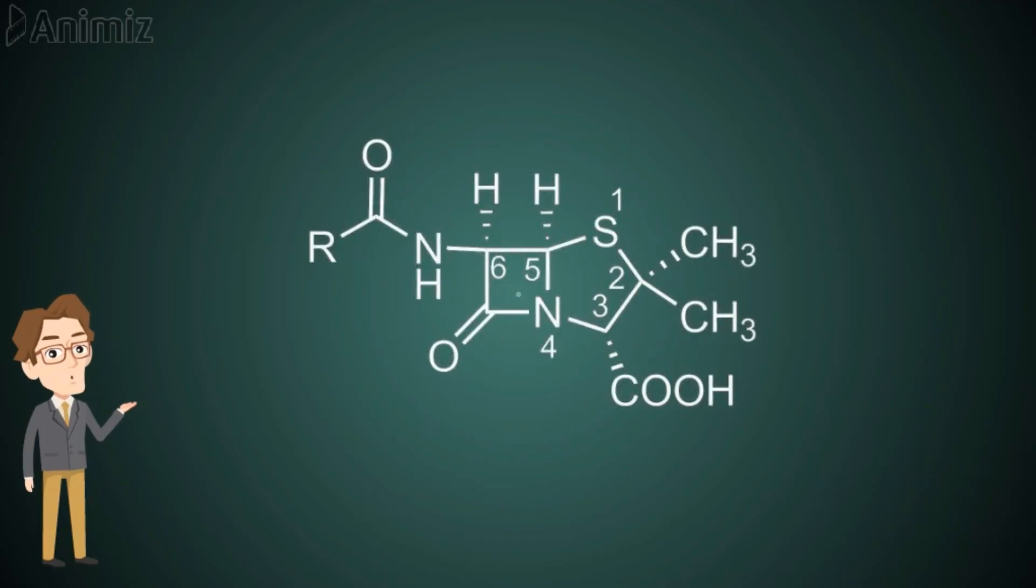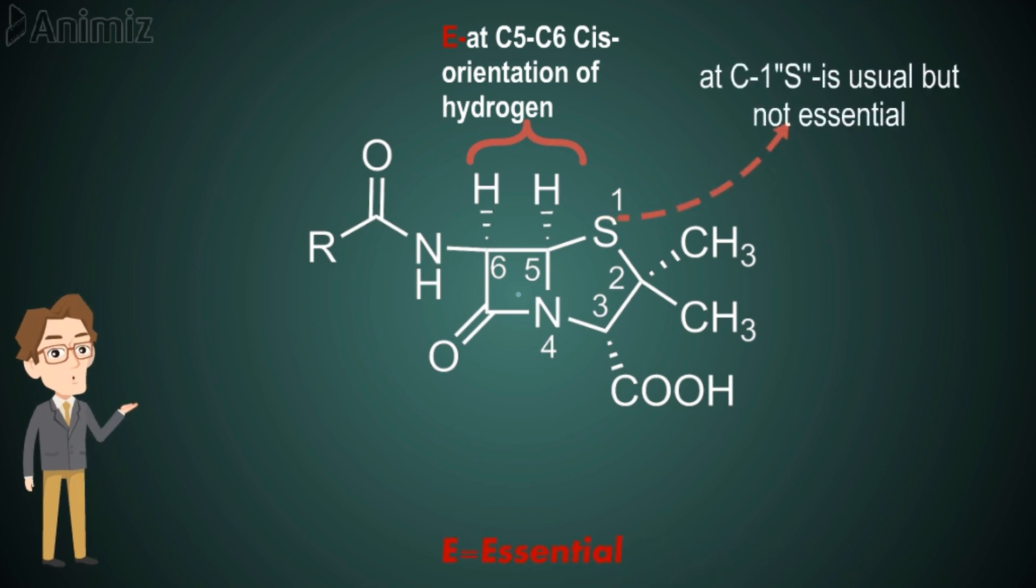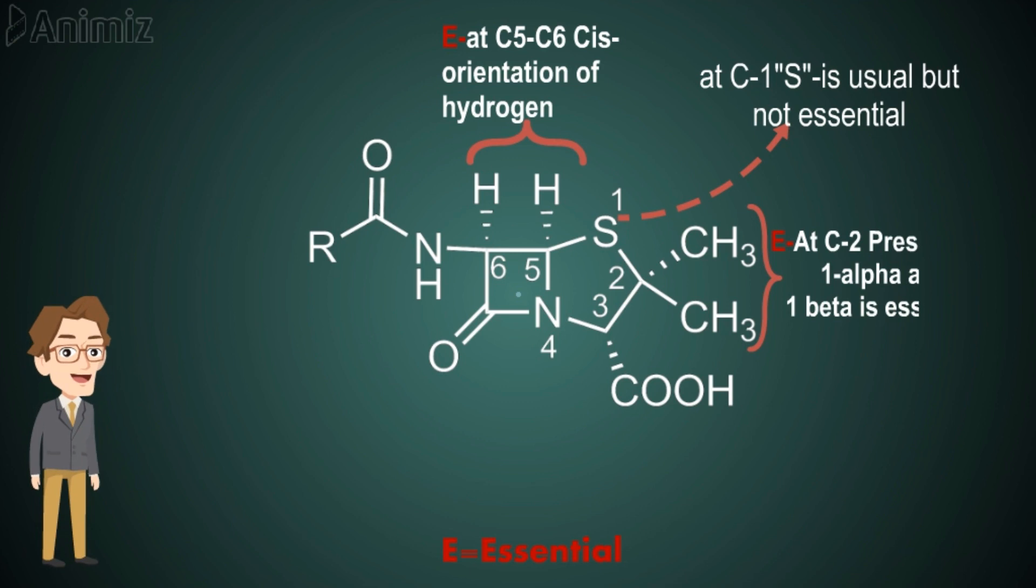At C5-C6, cis orientation of hydrogen is required. At S1 position, sulfur is present but it's not essential. At C2, two methyl groups are present - one should be alpha and one should be beta for showing maximum activity.